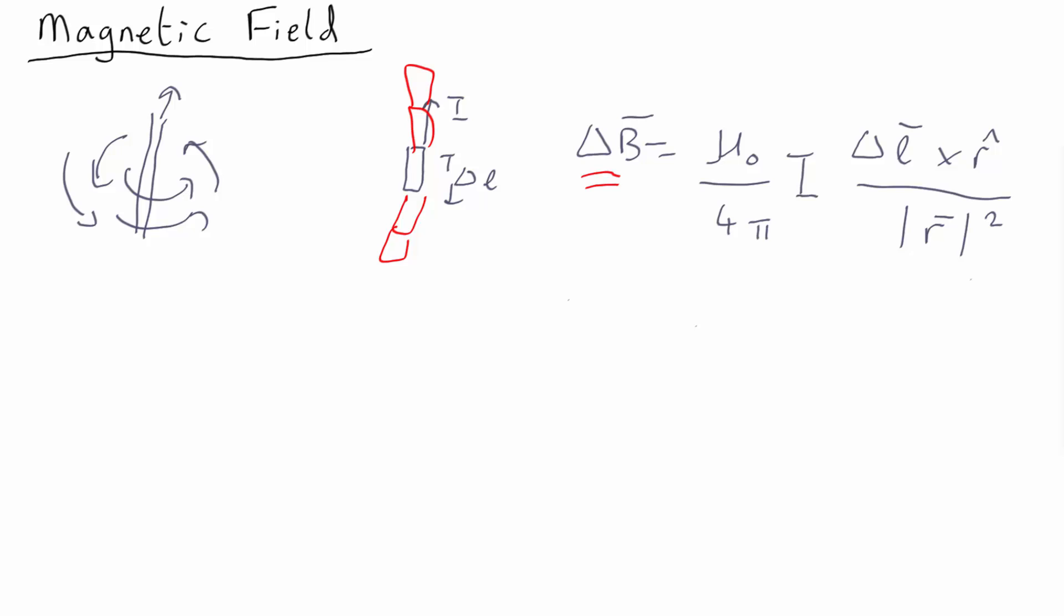What's the equation looking like? Well it's actually rather similar to the inverse square law things we've been talking about. You've got a constant, you've got 1 over mod R squared, the difference is you've got delta L cross the unit vector R.